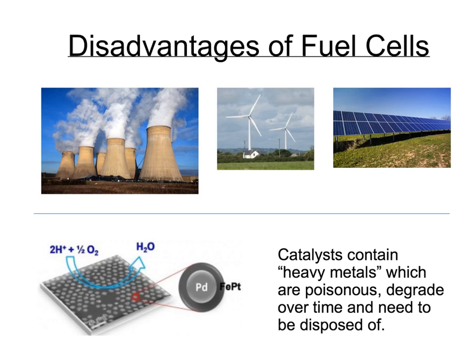Fuel cells running on hydrogen can only be thought of as completely green or pollution-free if the energy has been produced in a pollution-free manner — in other words, for example, from wind energy, solar energy, wave energy, or one of these other green methods.